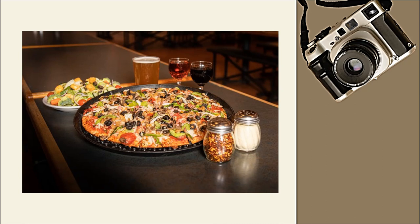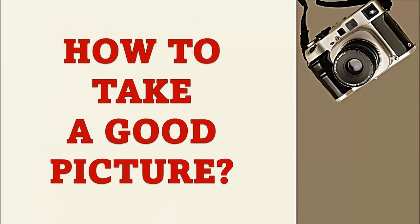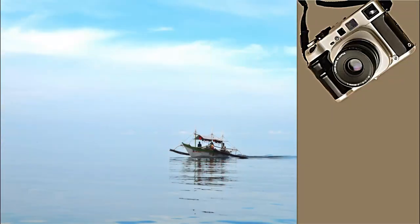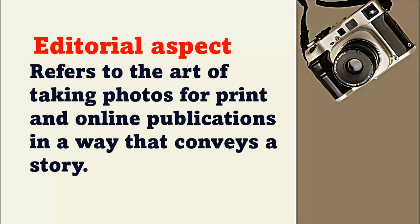Now let's move on to how we can train our student journalists to take good pictures, because that is very important in photojournalism. We have to consider two aspects: the technical aspect and the editorial aspect. When we say technical aspect, we are referring to the utilization of the camera, which I'm not going to discuss here. What I will focus on is the editorial aspect — to ensure that our student journalists are taking pictures with story, showcasing or demonstrating an interesting story. In order for photojournalists to ensure that, they need to be knowledgeable about composition.